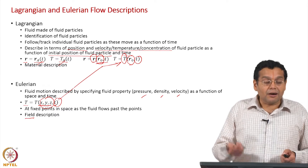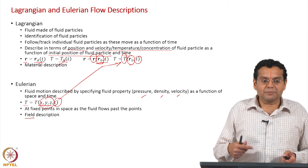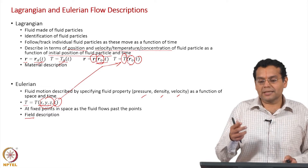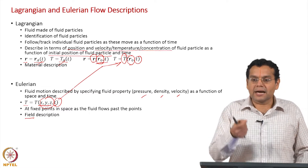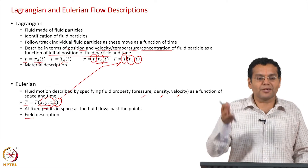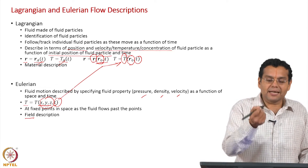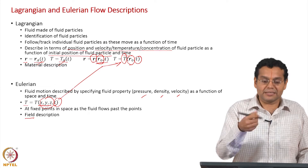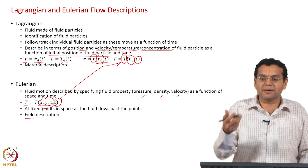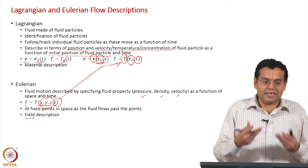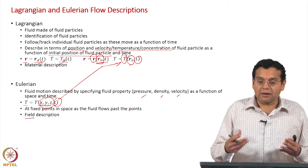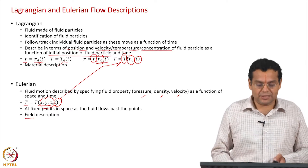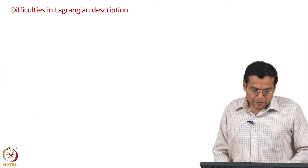In terms of measurement, Eulerian comes first because we are used to it and it is easy to measure — placing a thermocouple at a point and measuring is straightforward. In terms of theory and physical principles, Lagrangian comes first. Please keep that distinction in mind.